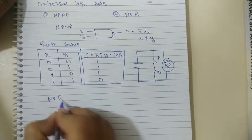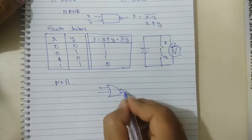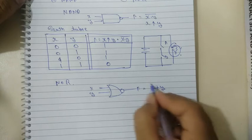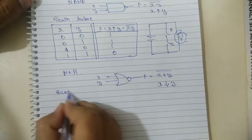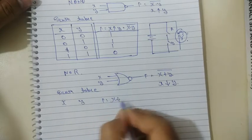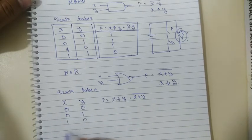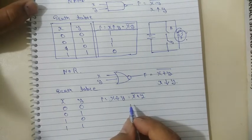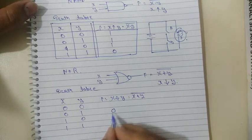Now let's take a look at the NOR gate. The NOR gate has similarity with the OR gate and NOT gate. Inputs are X and Y, and the output is X plus Y bar, or X NOR Y. For the truth table, the output is the complement of the OR gate output. In the OR gate the output is 1 when any input is 1, so here output will be 0 when any input is 1.